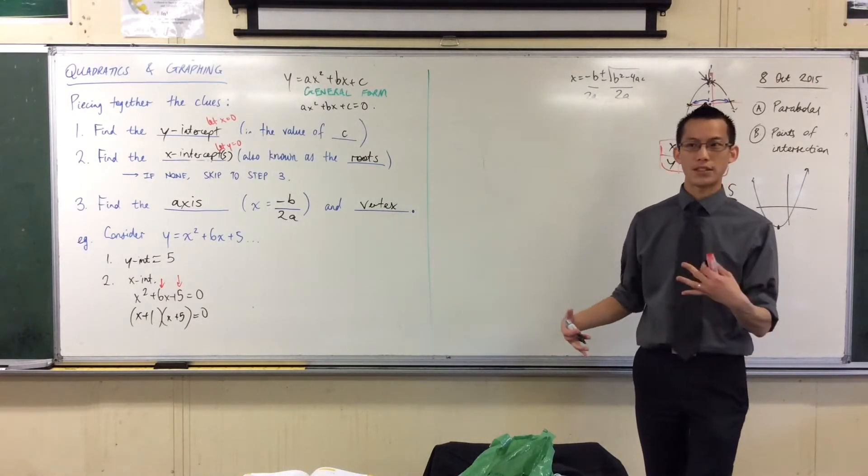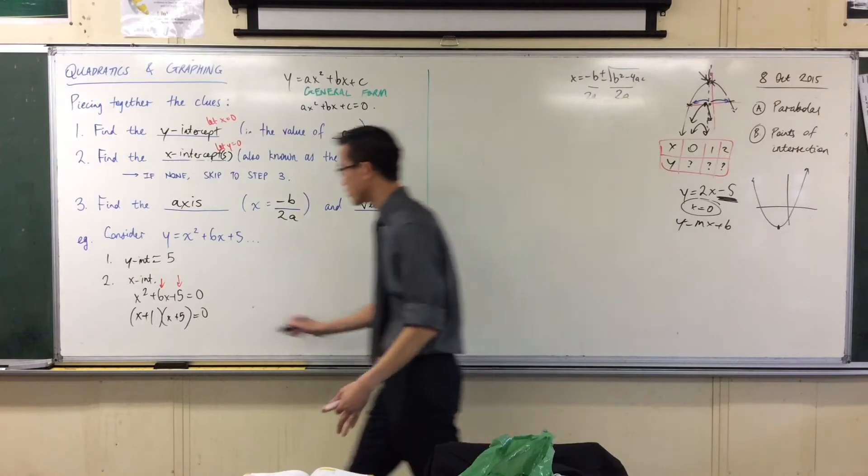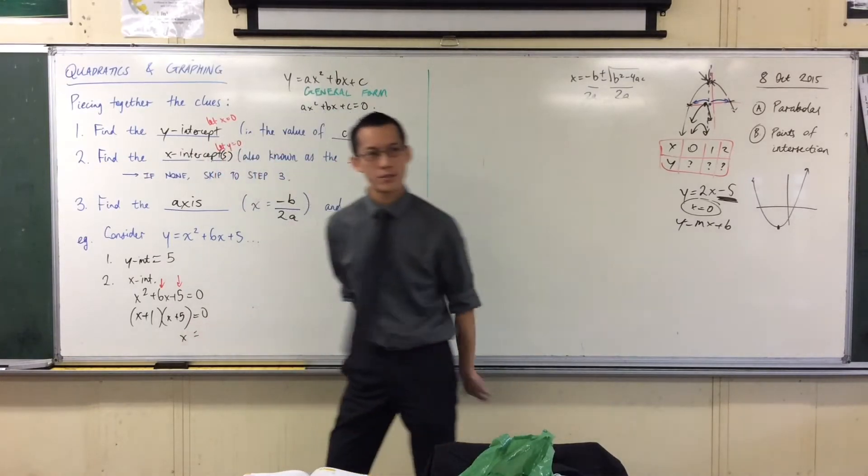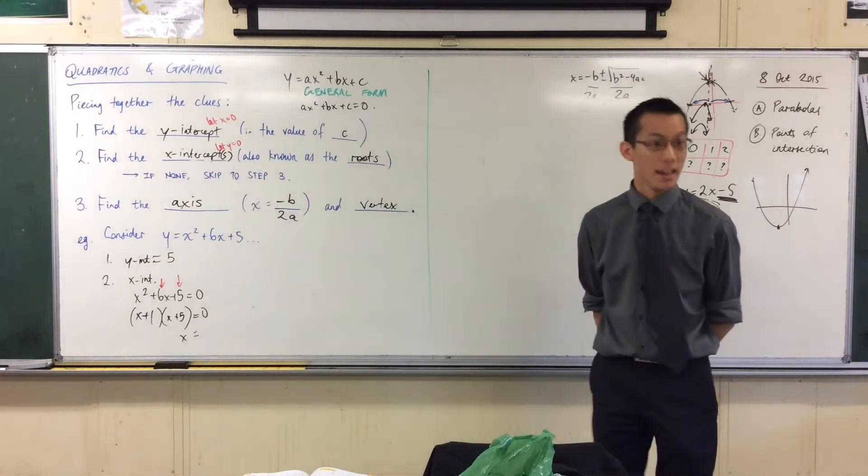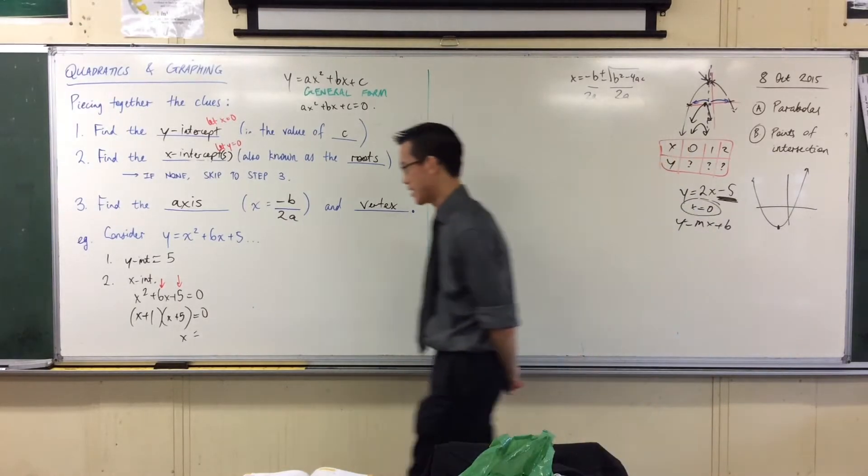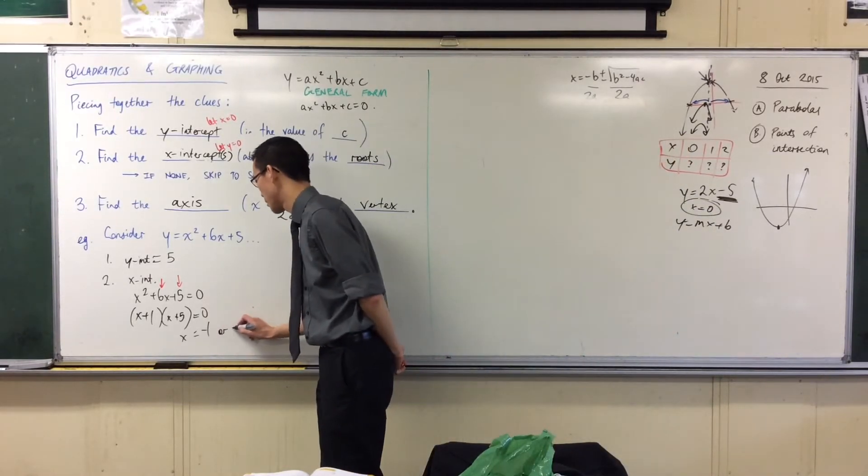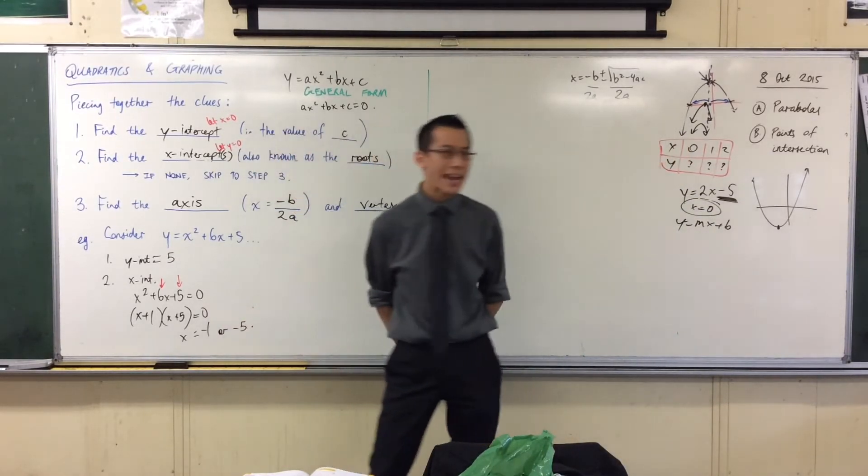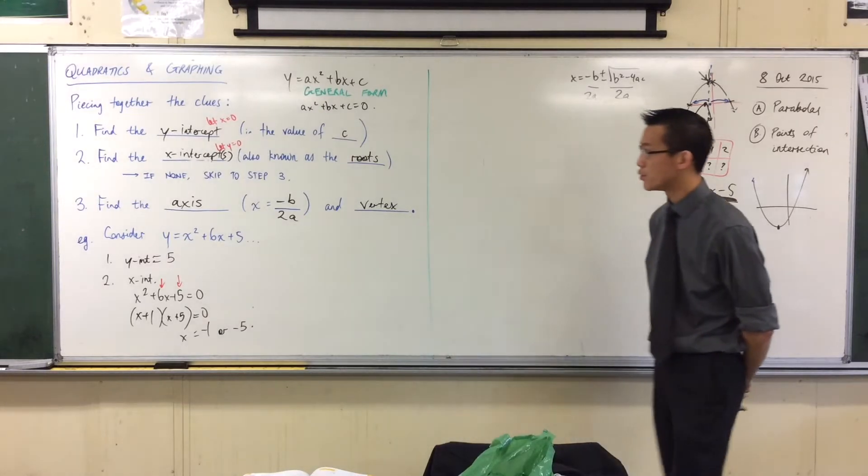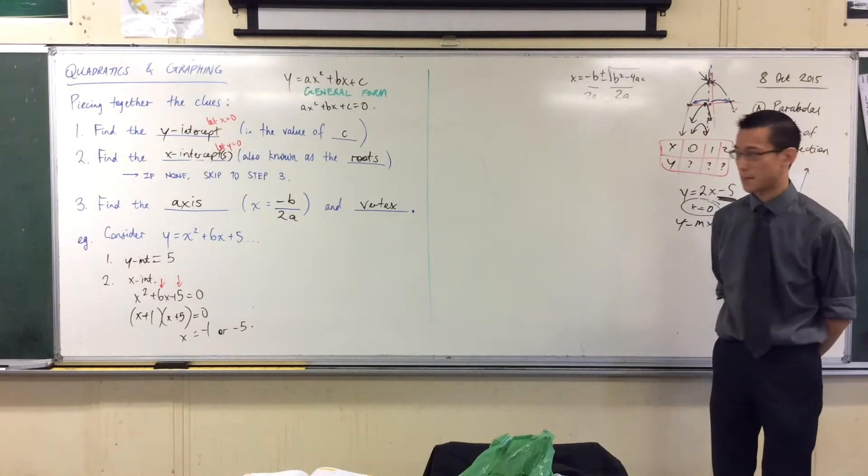Now, I've factorized, but I haven't solved. I want x equals. What are my two values? Negative one and negative five. Fantastic. So let's just chuck that in. Hey presto, I've done step two. I found the x-intercepts.